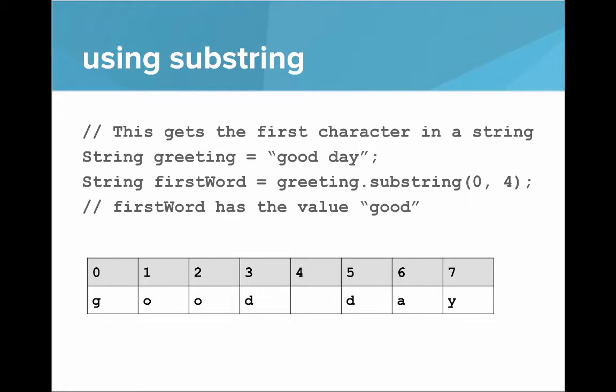So let's say we have a string called greeting, which is equal to good day. And then we want to get the first word. So we say greeting dot substring zero, four.